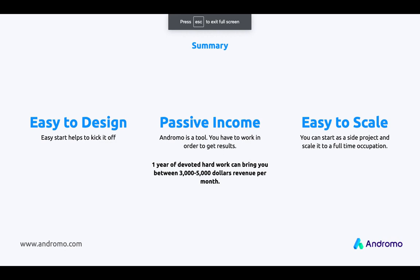So to summarize everything I wanted to tell you: first, Andromo is easy as you could see, and if you still need more explanations we have videos on our YouTube channel with more videos coming. Number two, Andromo is a tool and you can use it to achieve your goals, but it will require your personal time, involvement, commitment, and strong desire to create something cool and valuable. According to our calculations, one year of devoted hard work can bring you between three and five thousand dollars revenue per month. So you can try, you can grow, and transfer your passive income to your main income. I think that you definitely have an interest.